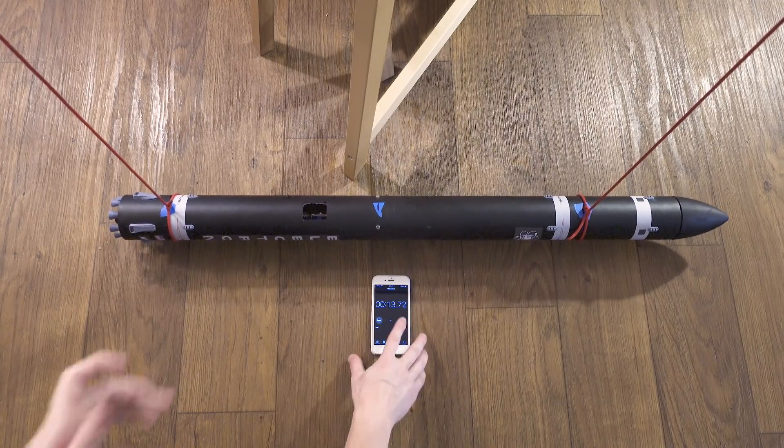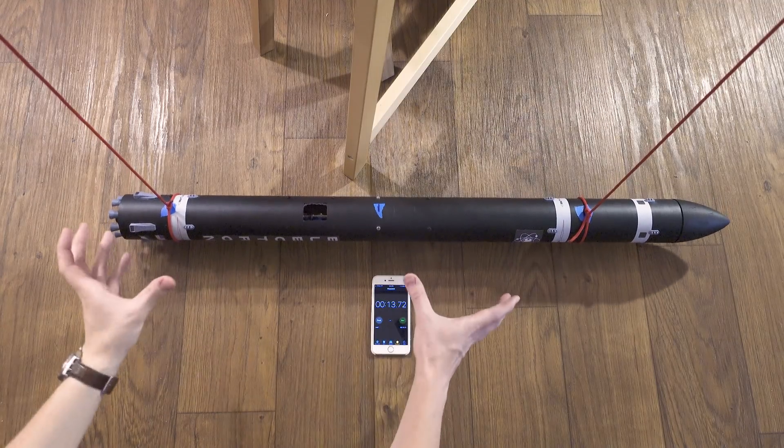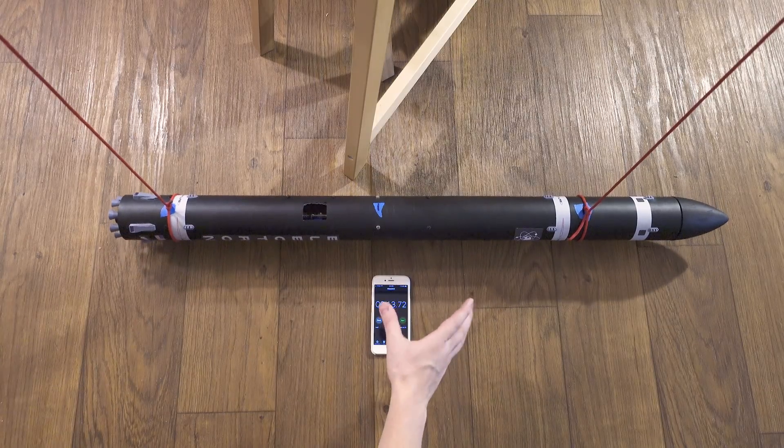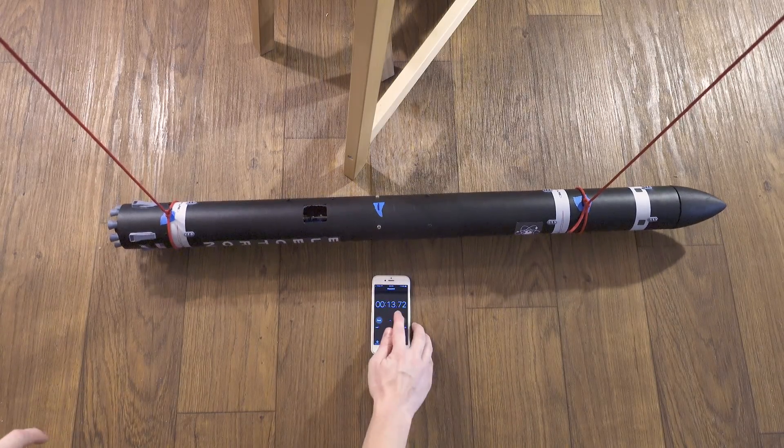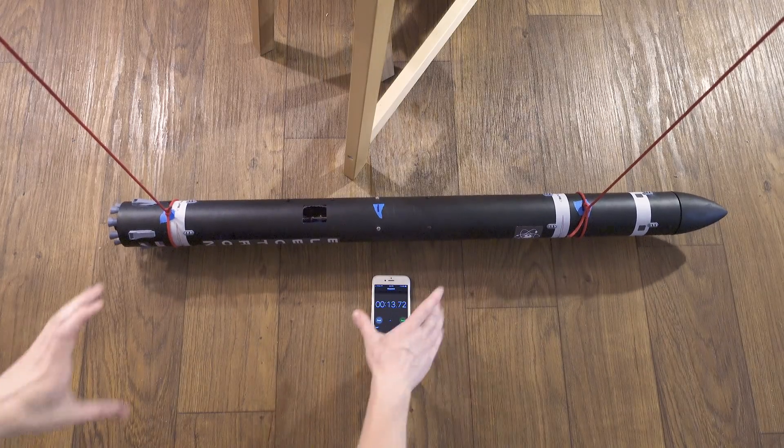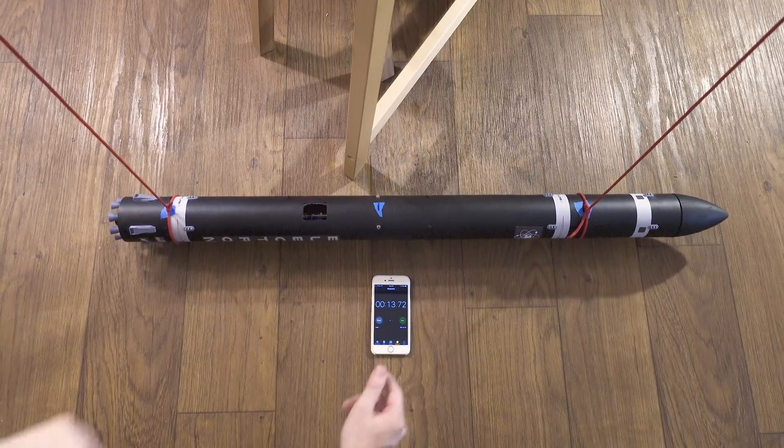So that's 10 full oscillations, which took 13.72 seconds. And what we want is the average time for each individual oscillation. All we have to do to get that time is move the decimal point one way to the left. So that's 1.372 seconds for each average oscillation. And with that, we have just one more step to go.